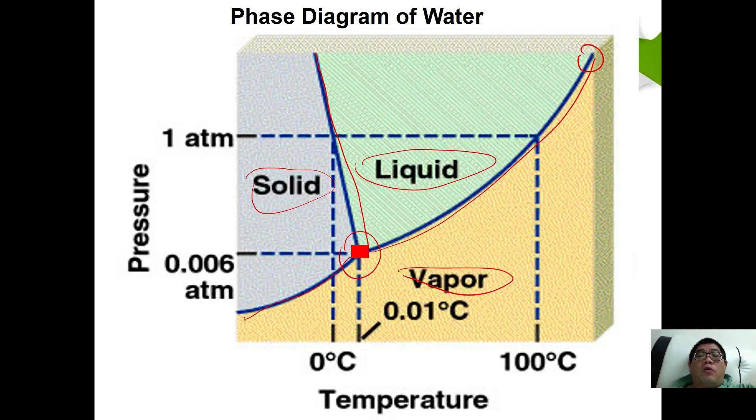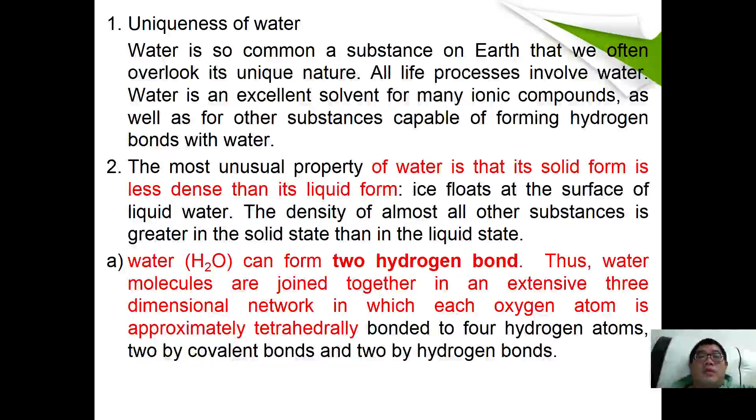Let's have a look at more properties of water. Water is such a common substance on Earth that we often overlook its unique nature. All life processes involve water. Water is an excellent solvent for many ionic compounds as well as other substances capable of forming hydrogen bonds with water. The most unusual property of water is that the solid is less dense than the liquid. Ice floats at the surface of liquid water, and the density of almost all other substances is greater in the solid state than in the liquid state.